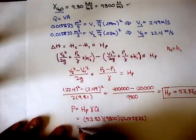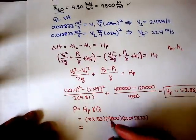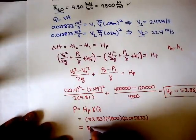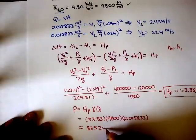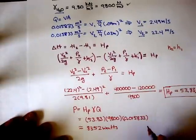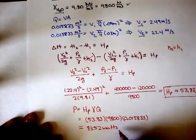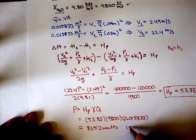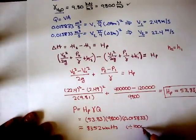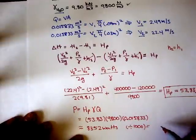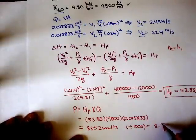If we solve that out, we get about 8,352 watts. To convert that into kilowatts, we just divide by 1,000, and that gives us 8.35 kilowatts.